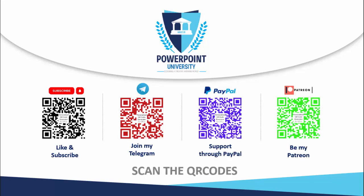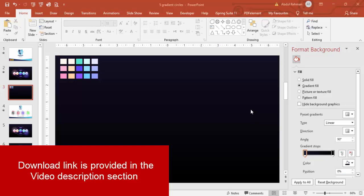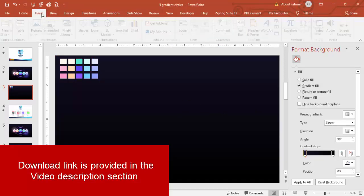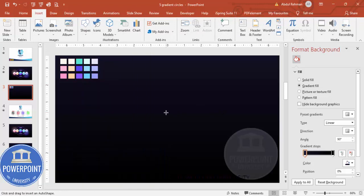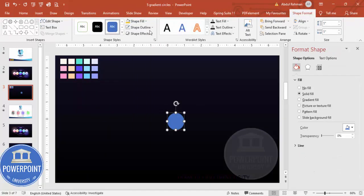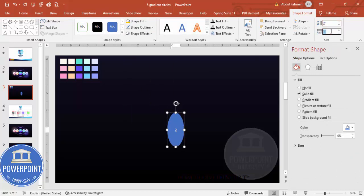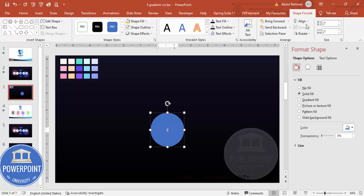Let's start the tutorial. Add a new slide and change the background to any dark color. Then go to Insert Shapes, and from the Basic Shapes choose the oval shape. Set the shape outline to no outline, and make the height and width 2. Then align center and align middle.